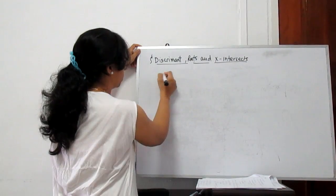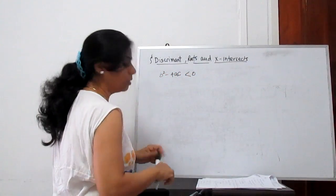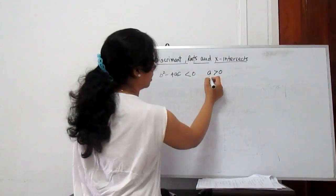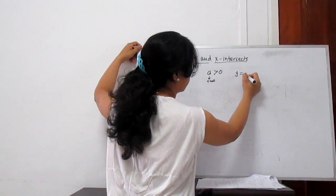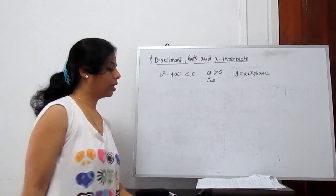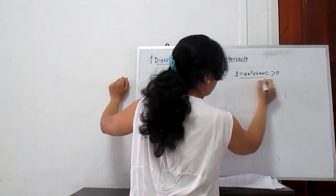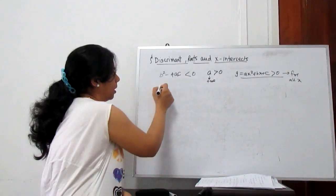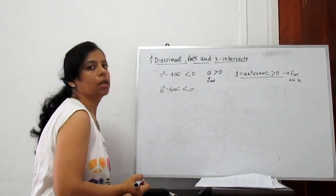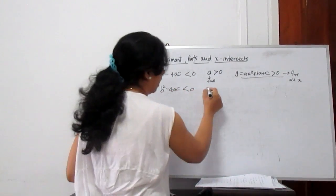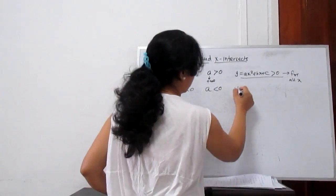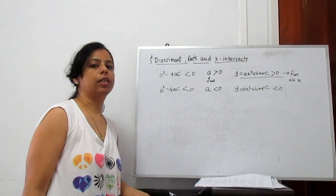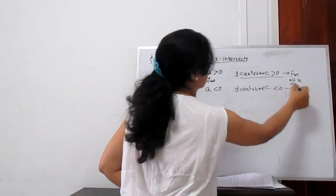If B² − 4AC is negative and A is greater than 0 (positive), then y = ax² + bx + c is always positive for all values of x. If A is negative and B² − 4AC is negative, then y = ax² + bx + c is always negative — less than 0 — for all values of x.